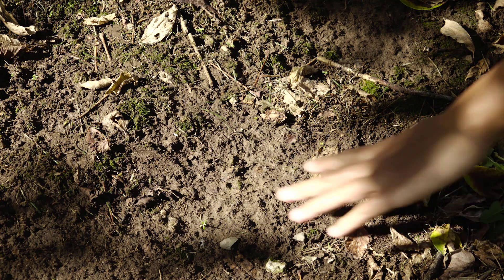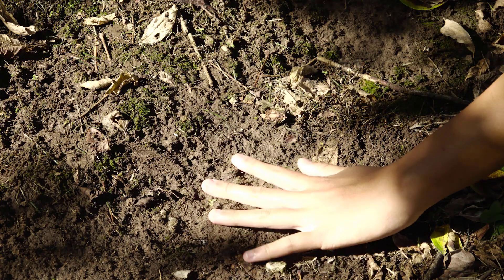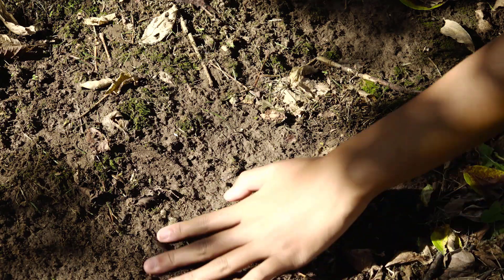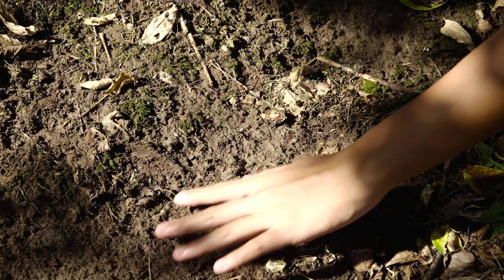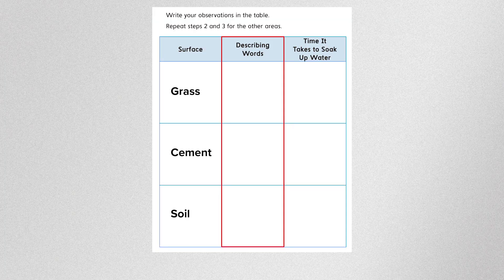Now let's move on to the soil surface. First, make some observations about this area. Describe how the area looks and feels. Record your observations in the data table. When you're ready, select Continue.